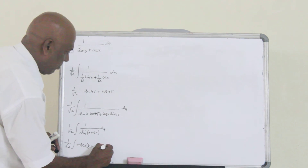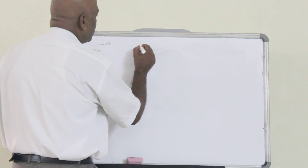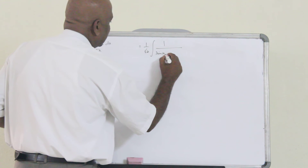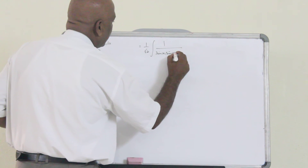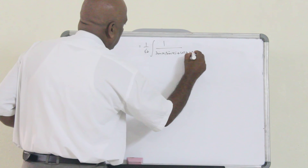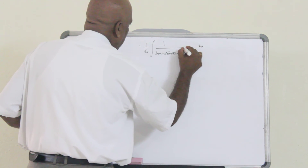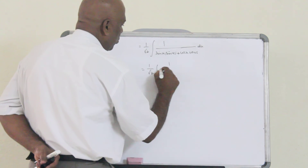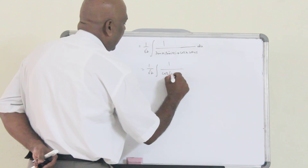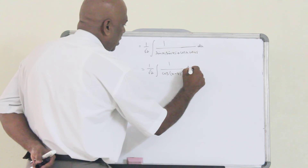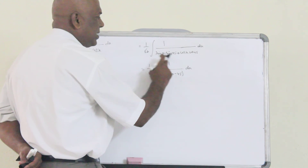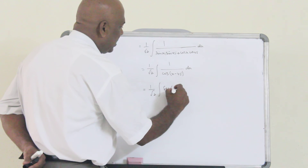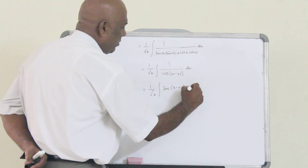You will have a direct formula for cosec(x + 45). Alternatively, from here, I can write 1 by root 2 integral 1 by sin x sin 45 plus cos x cos 45. This follows the formula cos a cos b plus sin a sin b equal to cos(a minus b). That will become 1 by root 2 integral 1 by cos(x minus 45) dx, which is 1 by root 2 integral sec(x minus 45). For this also, we have a direct formula.